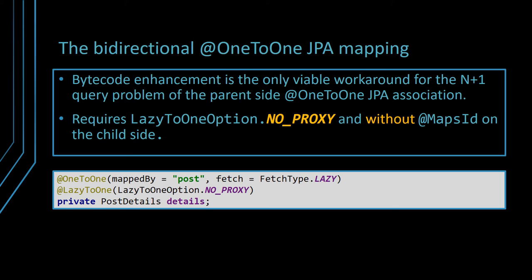When using bytecode enhancement, the parent entity class bytecode will be instrumented so that the getter and setter methods are changed to provide field-based lazy loading capabilities. This way, Hibernate does not need to fetch the child one-to-one association to know whether to assign it to a null variable or to a proxy. Since the getter method call is intercepted, Hibernate can delay the initialization of the child side one-to-one association until the entity property is accessed for the very first time. Only if the underlying association has not been initialized will a secondary query be issued, and Hibernate will return either a null reference or the actual child entity object.